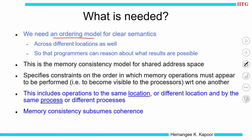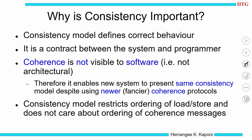What we need is an ordering model for clear program semantics, and it should be across all locations so that programmers can reason about results. That is the memory consistency model — defined for same or different locations, by the same or different processes. Memory consistency is important because it helps define correct behavior of a program, and it is implemented by the hardware, making it a contract between the system and the programmer.